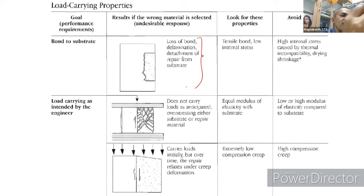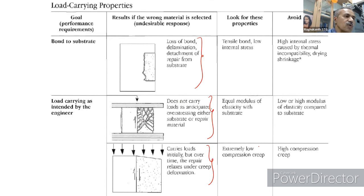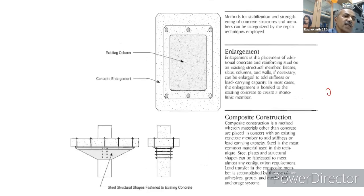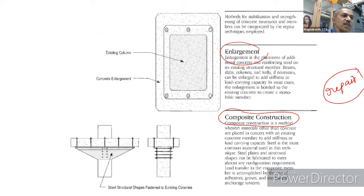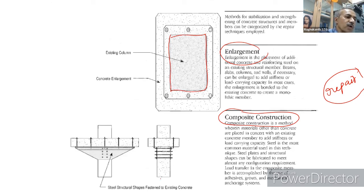If compatibility issues are not considered, loss of bond occurs and the entire repair strategy fails. Creep differences between new and old materials also affect their interaction. For repairing existing columns and beams, one approach is composite construction or enlargement — increasing the cross-sectional dimensions so that the enlarged section can carry more load — as part of the rehabilitation strategy.